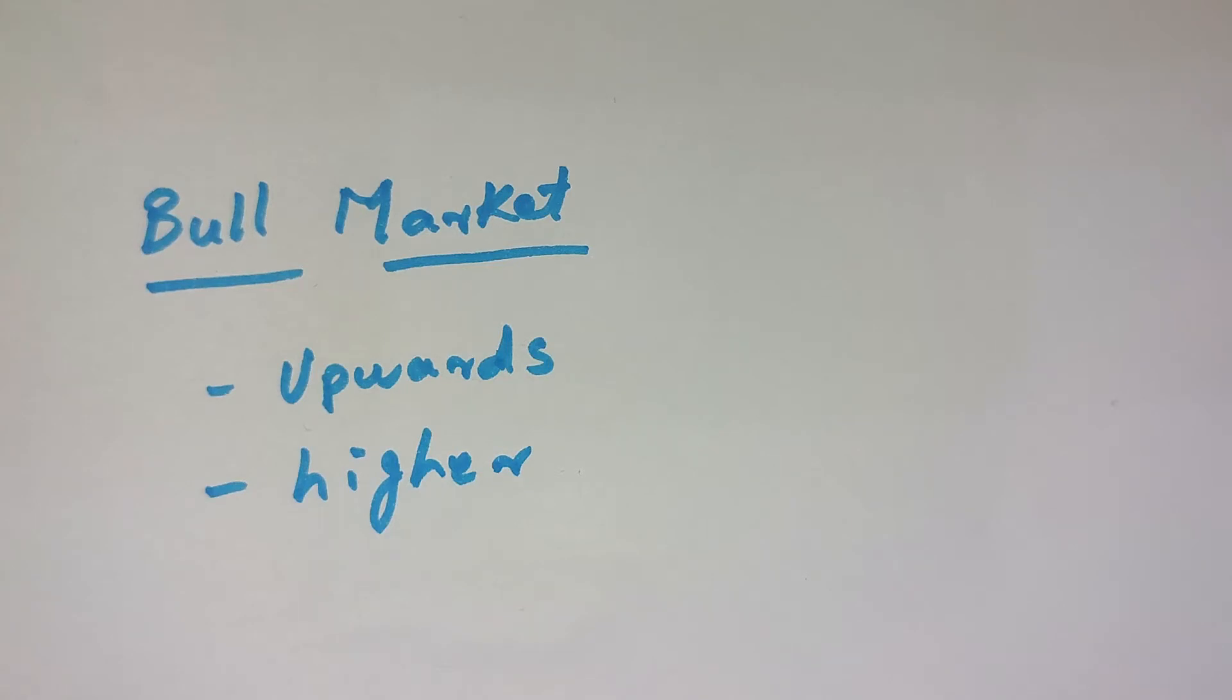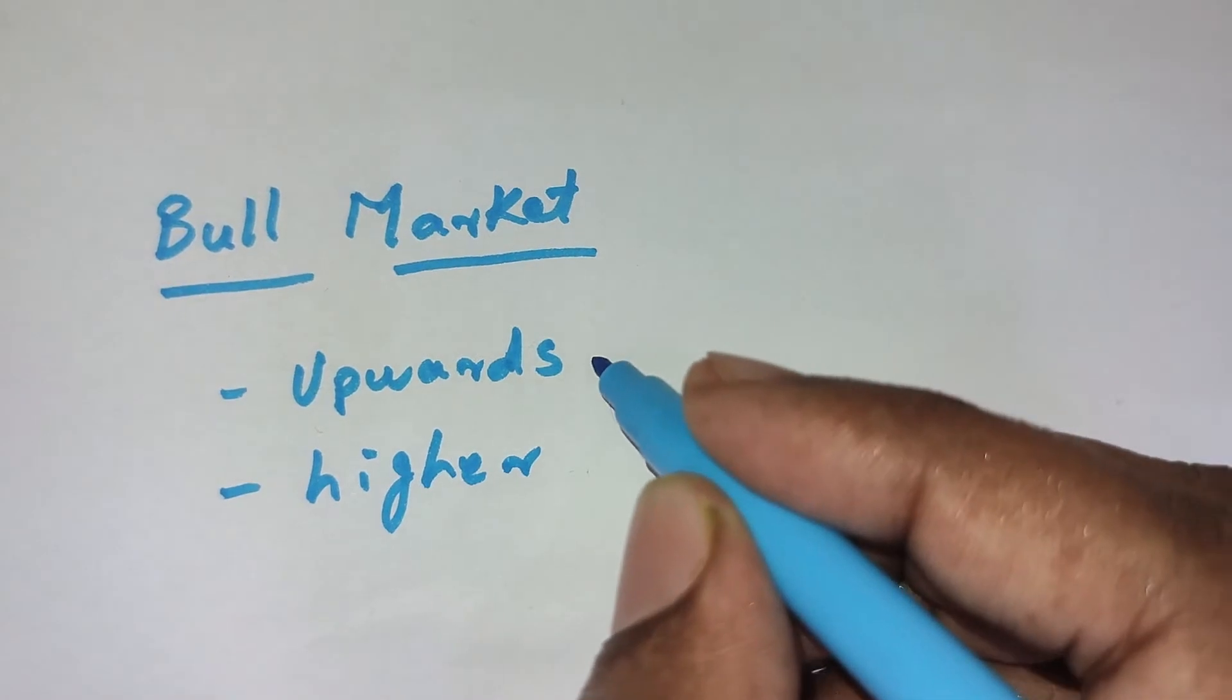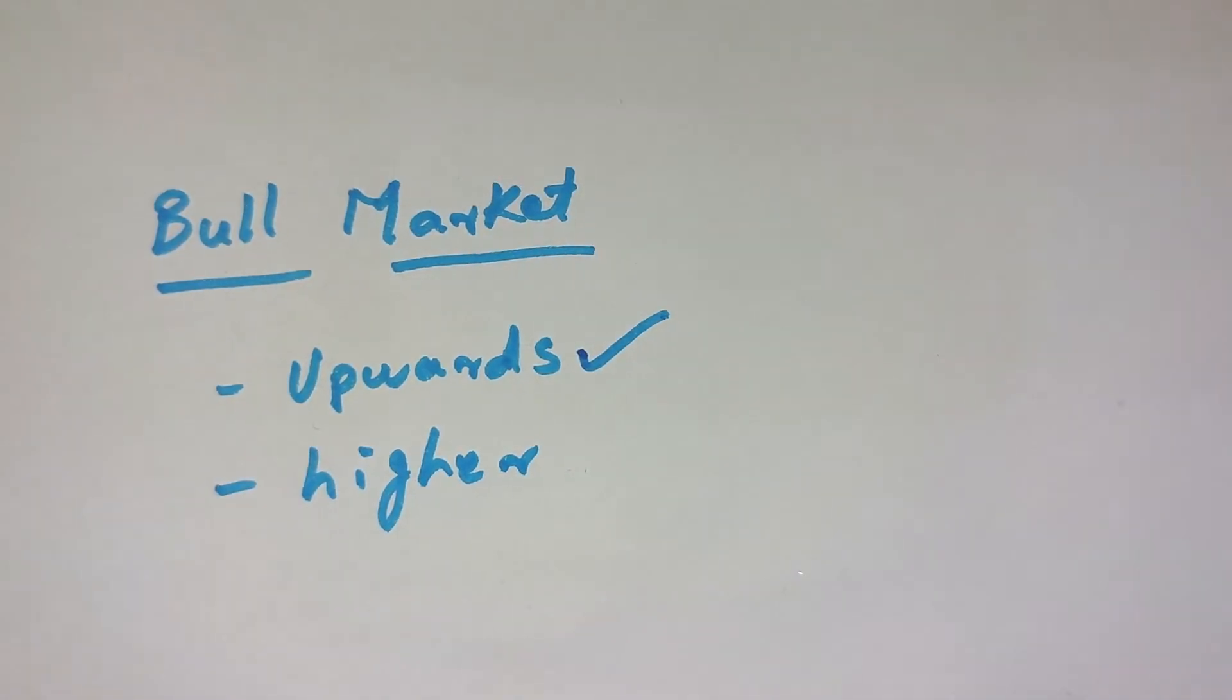Why is it named as bull market? If you take a bull, how it will attack its enemies - it will thrust up its horn and then try to attack. So basically the horn just moves in the upward direction, right? So in a similar way, the bull just thrusts up his horn towards upward direction before attacking its enemy.